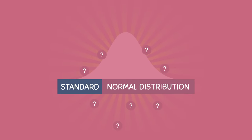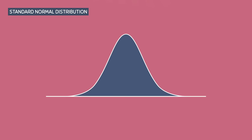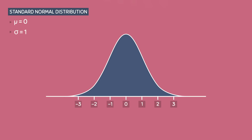What is the standard normal distribution? The standard normal distribution is a special type of normal distribution that has a mean of 0 and a standard deviation of 1. Because of this, it is always centered at 0 and has intervals that increase by 1. Each number on the horizontal axis corresponds to a z-score.